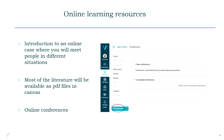Online learning resources: before you start to work on the comparative assignment, you will be introduced to an online case where you will meet people in different situations. This case is meant to be an inspiration for your further work. Most of the literature you need for this course will be available as PDF files in Canvas. By participating in an online conference room, you will learn to know your fellow students and teachers and get a feeling of belonging to a class and a group of international students.